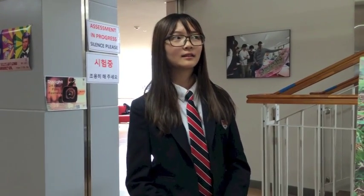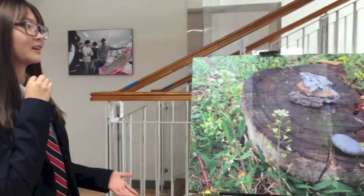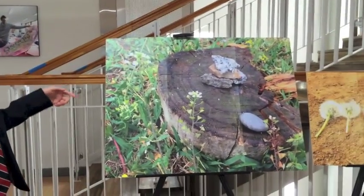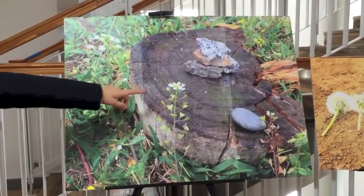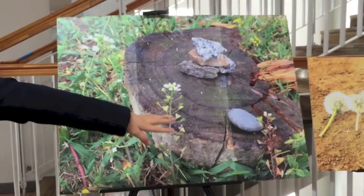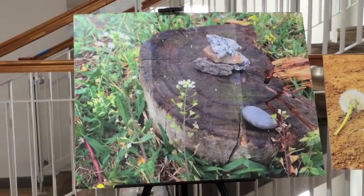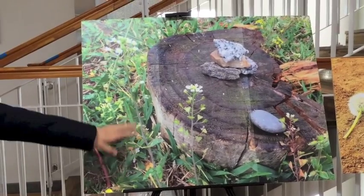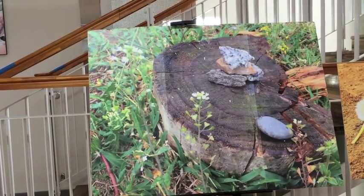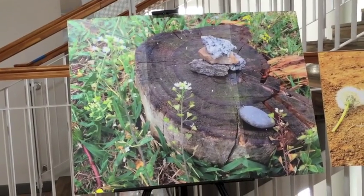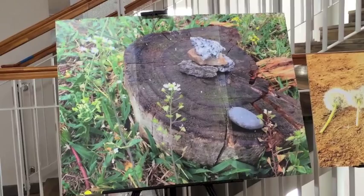Hello, my name is Nina. The title of this piece is Bowieing. As you can see, most of the rocks are together right there, and one rock is alone right there. So you can see how the rocks are bullying one rock. The materials I used were flowers, wood, rocks, and grass.